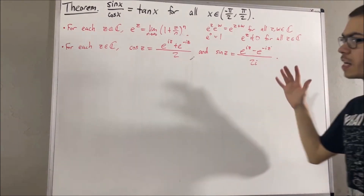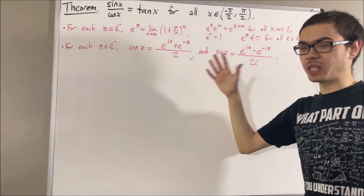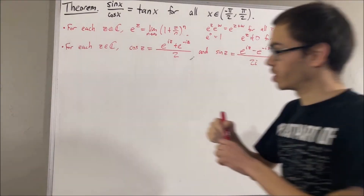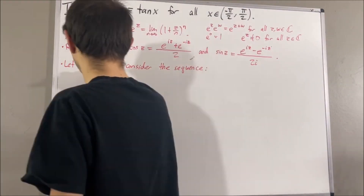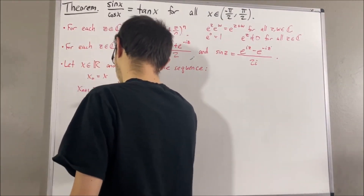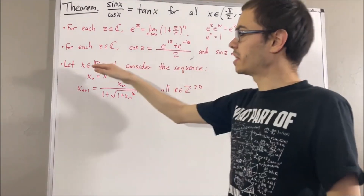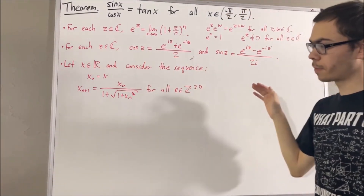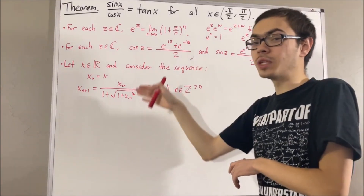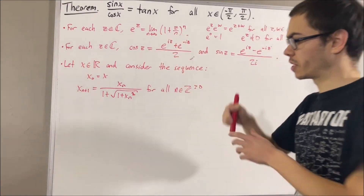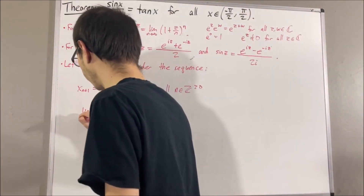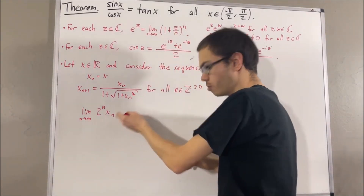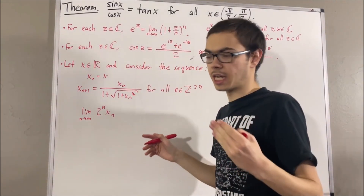We also defined another function whose name we gave arctangent, and we defined it as follows. Let x be any real number and consider the following sequence. Then the sequence 2 to the n times x_n converges, and we defined the value that this sequence converges to be the arctangent of x.